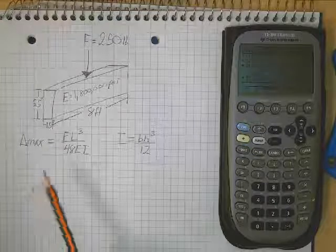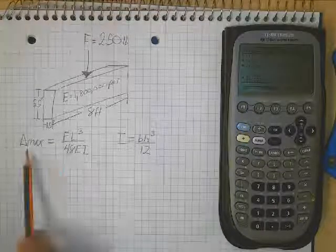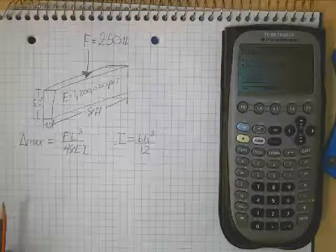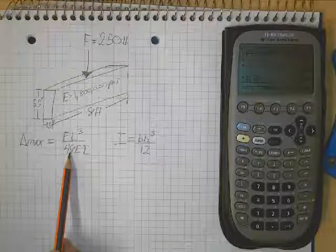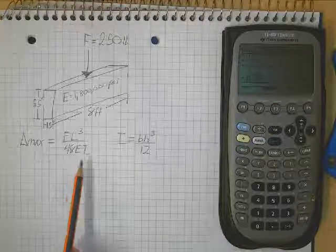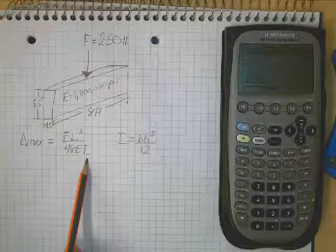They're asking, what is our deflection, or delta max? So for our deflection, we're using the equation force times the length cubed divided by 48 times the modulus of elasticity times the moment of inertia.